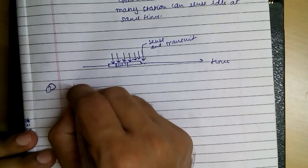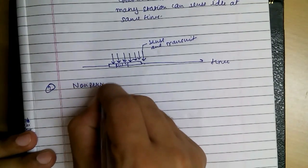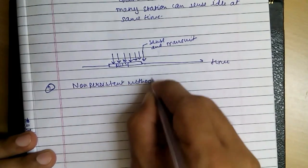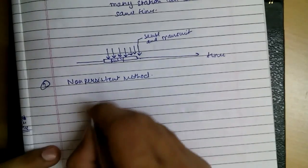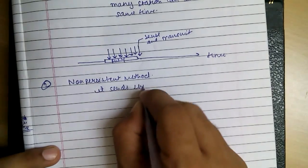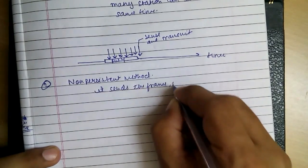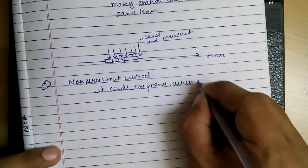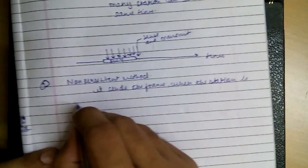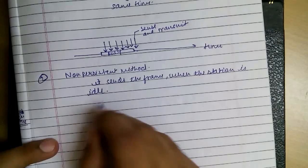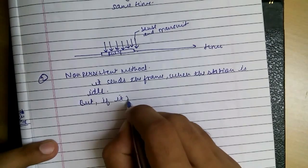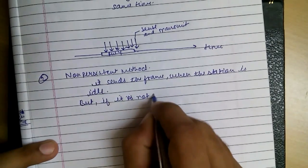So the next method is non-persistent. What this does is it also sends the frame when the station is idle. It is idle, but